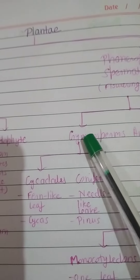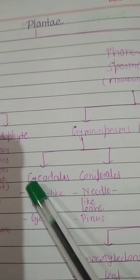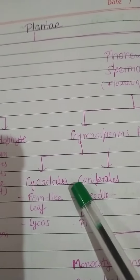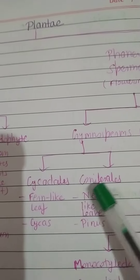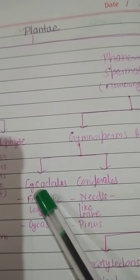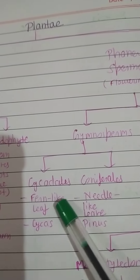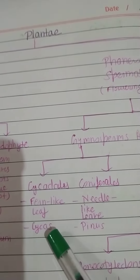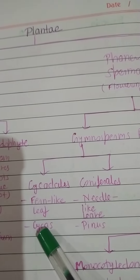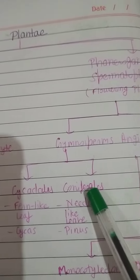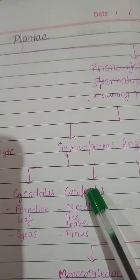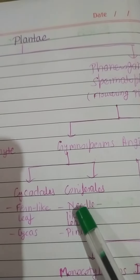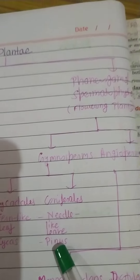Gymnosperm are of two types: that is Cycadales and Coniferales. Cycadales means fern-like leaf — for example, Cycas. Coniferales means needle-like leaf — for example, Pinus.